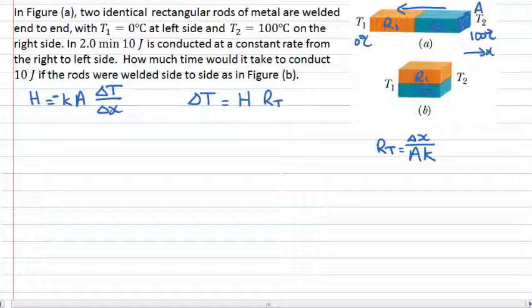They're the individual thermal resistances of those individual rods. And all we're going to do now is connect them together either in series or in parallel. And we want to think about the total thermal resistance.